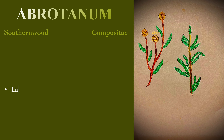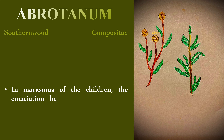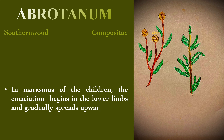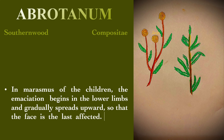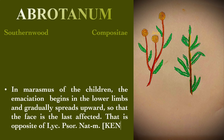In marasmus of children, the emaciation begins in the lower limbs and gradually spreads upward, so that the face is last affected — i.e., opposite of Lycopodium, Saurinum, and Natrium muriaticum.